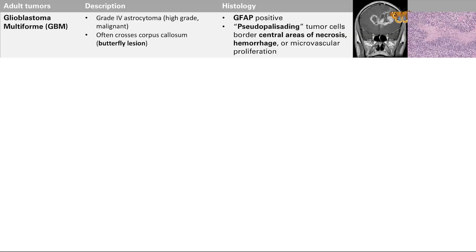Going into adult brain tumors first, we're going to talk about the glioblastoma multiforme, GBM. This is a super nasty tumor. It's made from astrocytes — it's a high-grade, grade 4 tumor. It often crosses the corpus callosum, which is right down the middle. So you see this tumor here that's crossed the corpus callosum, and it's got two butterfly wings, so we call this a butterfly lesion.